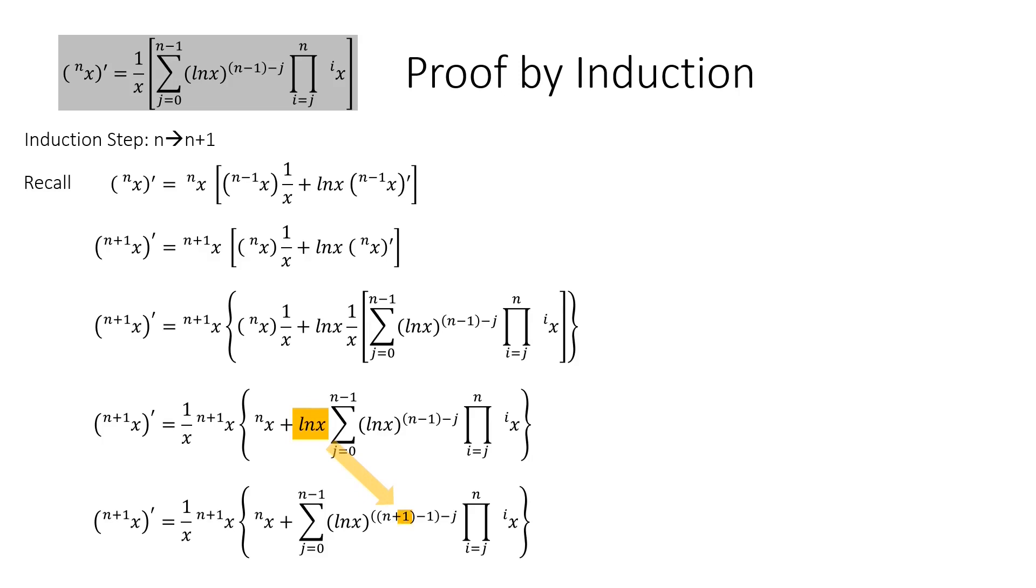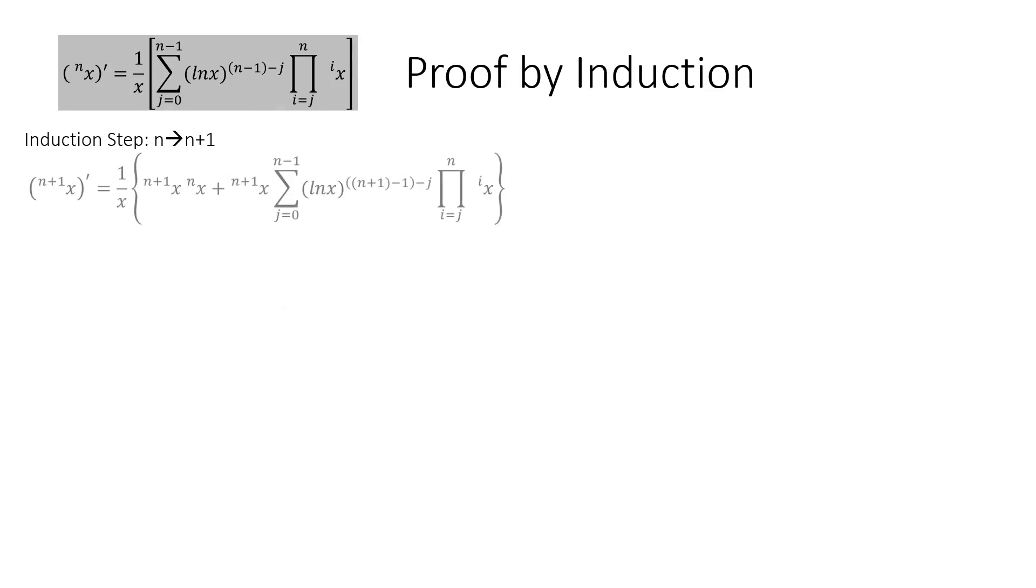I've saved the trickiest bit for last. Factor in the n plus 1th tetration into the curly brackets, and it distributes to both terms. But let's focus on the 1 outside the sum. We commute it inside the summation. And then inside the product. And increment the upper limit of the product.